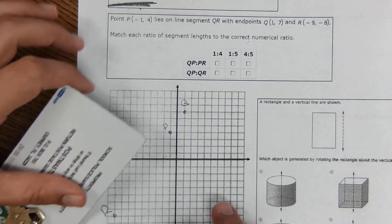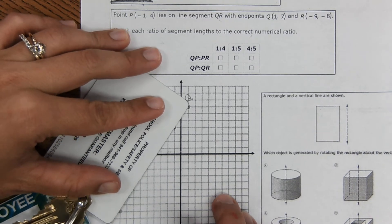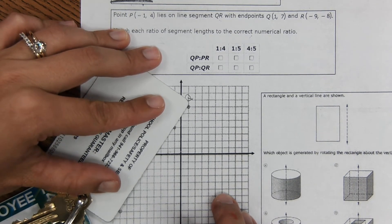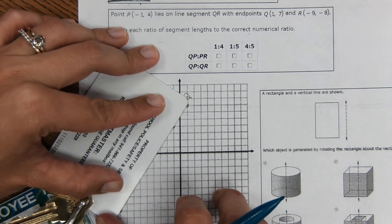Now that you have your points plotted, draw the line just on the test. Use your ID to get a perfectly straight line because that will help you solve it. And the smaller your dots, the more accurate your line will be as well.